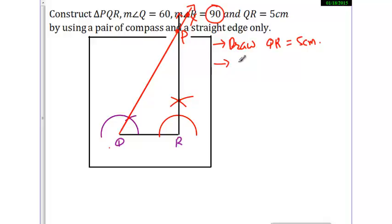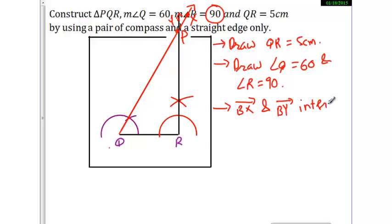Then draw angle Q is equal to 60 and angle R is equal to 90. Then Ray Bx. This is Ray Bx. And Ray, let me name here Y. Ray Bx intersect at point P.